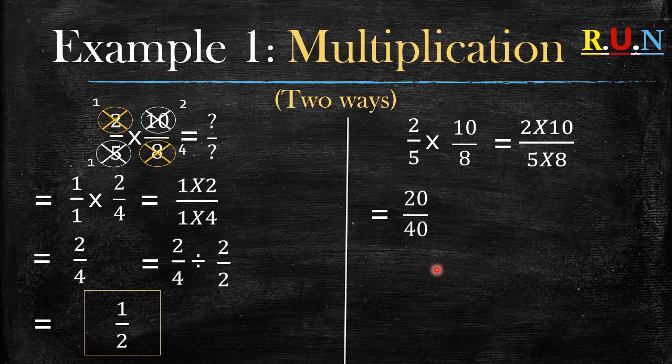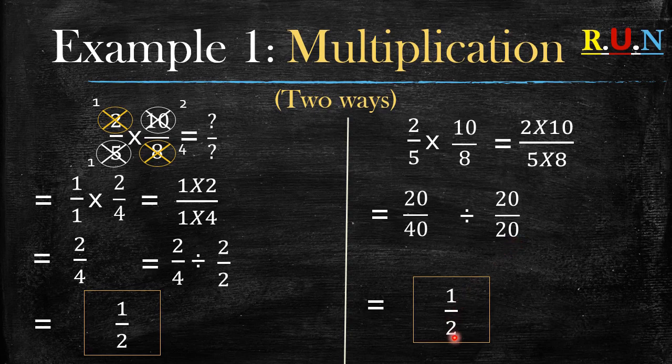It will also give you 0.5 which is the same as one over two. Or if you don't have a calculator you can look for the highest common factor of twenty and forty. What is the highest common factor of twenty and forty? It's twenty. Since twenty is the highest common factor we divide both the numerator and the denominator by twenty. Twenty divided by twenty gives you one. Forty divided by twenty gives you two.